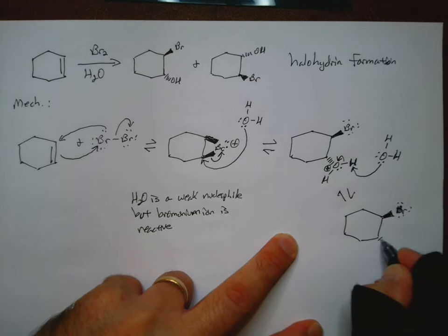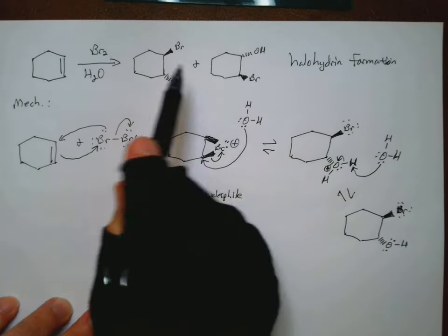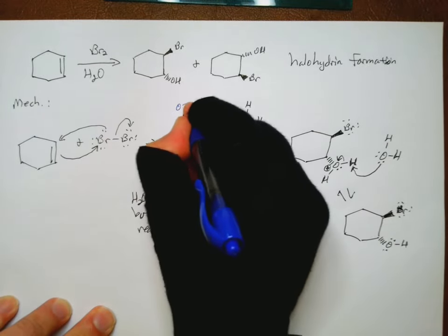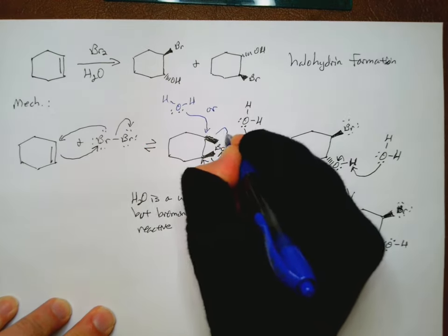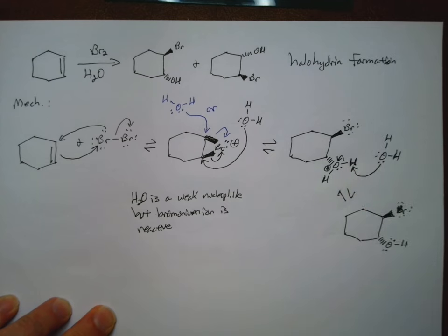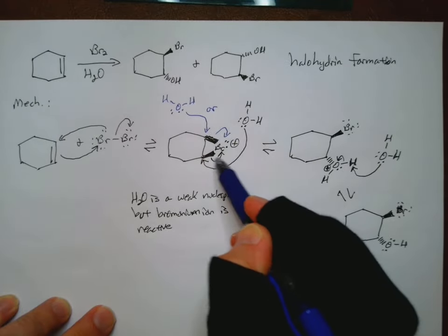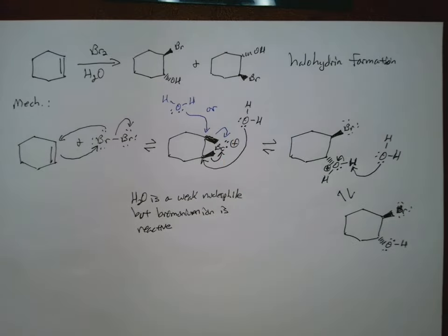And that will give us now, that's a B there for bromine, there is one of our two products. Now the other one is formed if our H2O attacks the other side. And then we'll go ahead, I won't draw those steps out. But it's the same sort of thing. We get the OH2 added here. And it's a dash. Bromine pops open. It's a wedge on this carbon. And then we get the deprotonation. And we get this guy here.